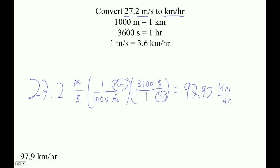And then let's just do the other conversion factor. The other way to do it is 27.2 times 3.6. And that's essentially what this conversion factor is. 27.2 times 3.6, and I get 97.92.